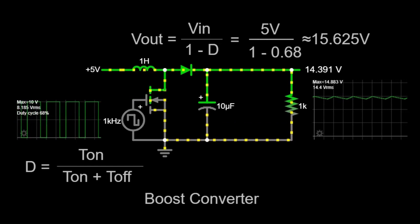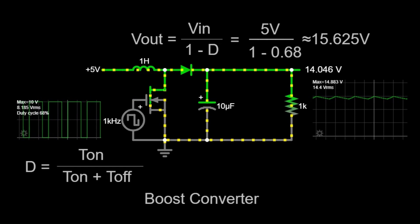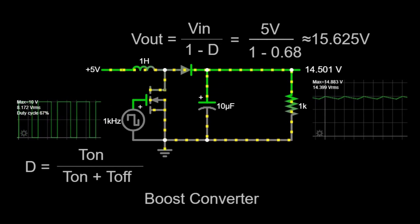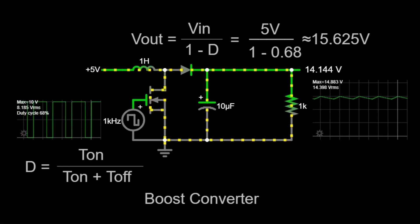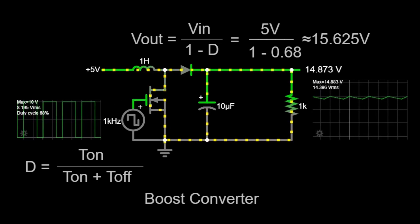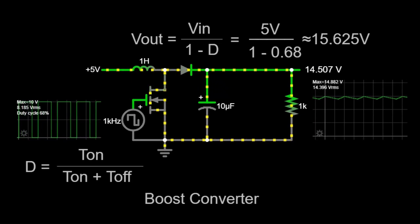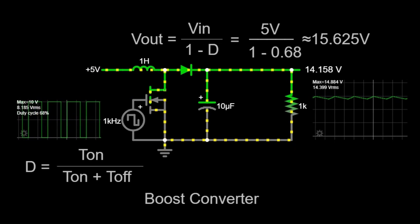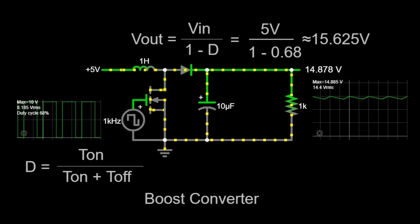Finally, we have the capacitor, which is shown here as 10 microfarads. The capacitor smooths out the output voltage, providing a stable DC output. This is important because electronic devices require a steady voltage supply to operate correctly. Without the capacitor, the output voltage would be a series of pulses rather than a smooth, continuous voltage.